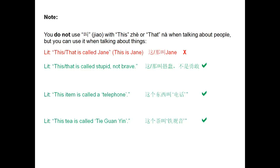If you really wanted to say 'this is Jane' and use the word 叫, you would have to specify it is a person. You have to say 'this person is called Jane': 这个人叫 Jane.